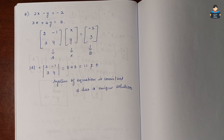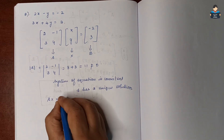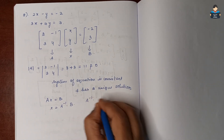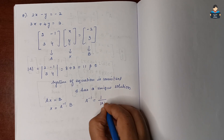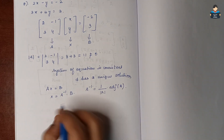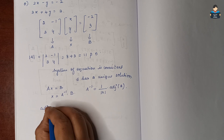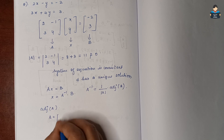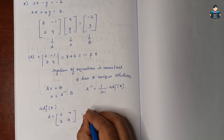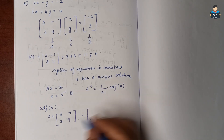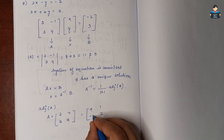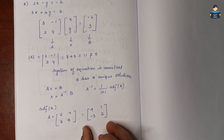So since AX equals B, X is equal to A inverse into B. To find A inverse, we use 1 over determinant of A into adjoint of A. For adjoint of A, we take matrix A which is [2, -1; 3, 4]. Interchange the diagonal elements: 4 and 2. Sign change for off-diagonal: minus 3 and 1. So adjoint of A is [4, 1; -3, 2].